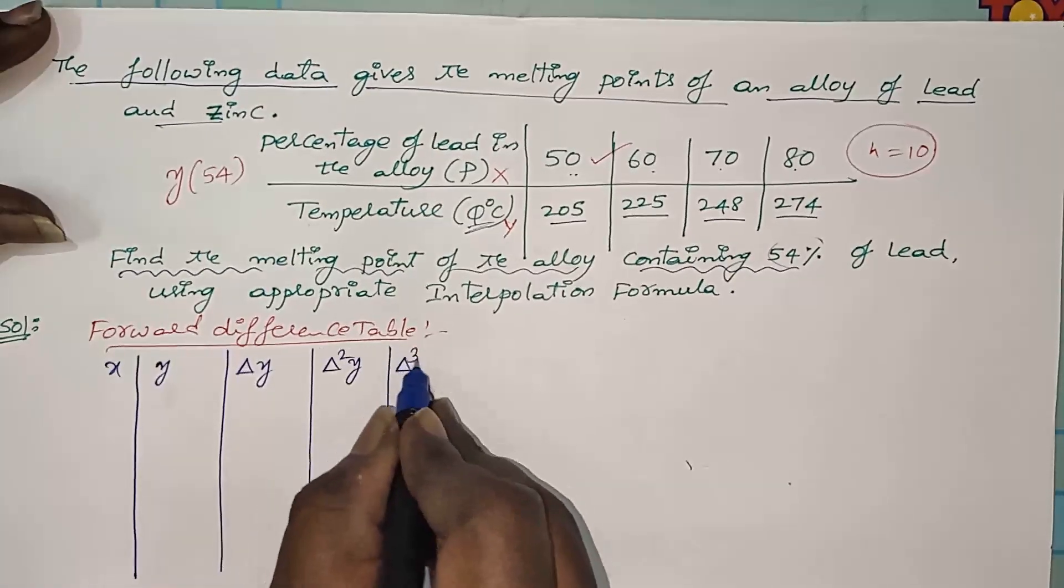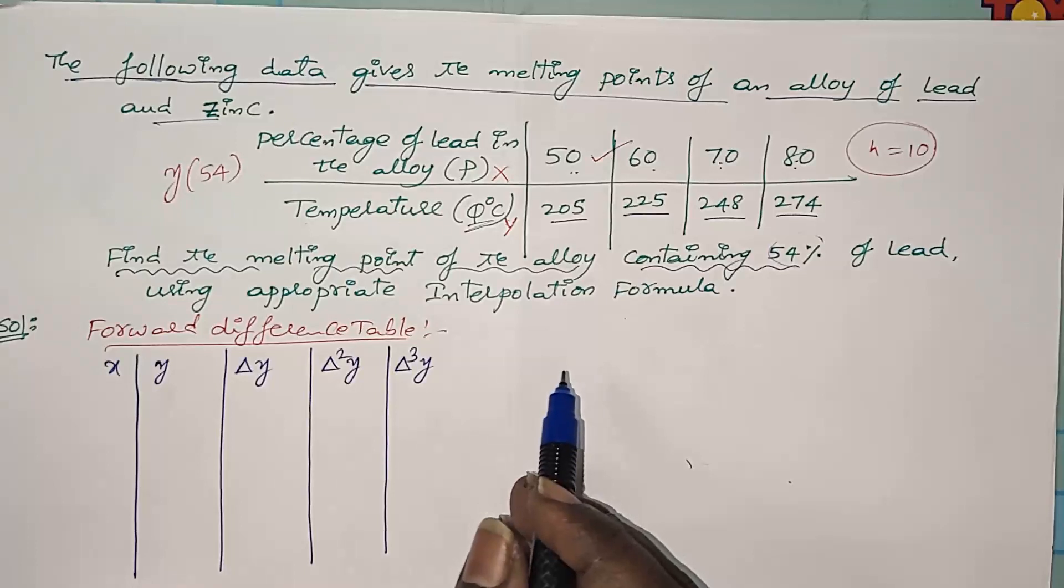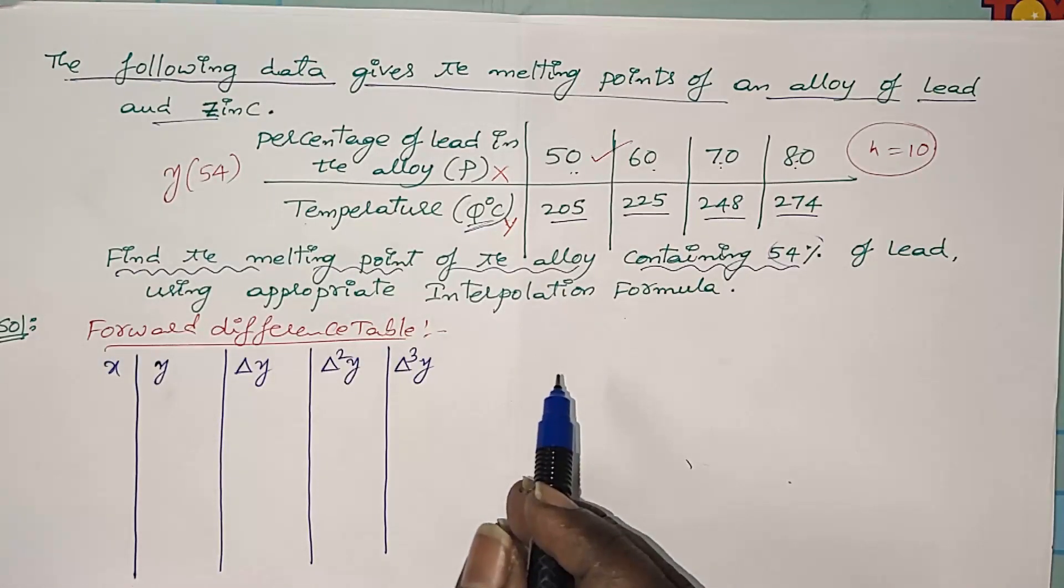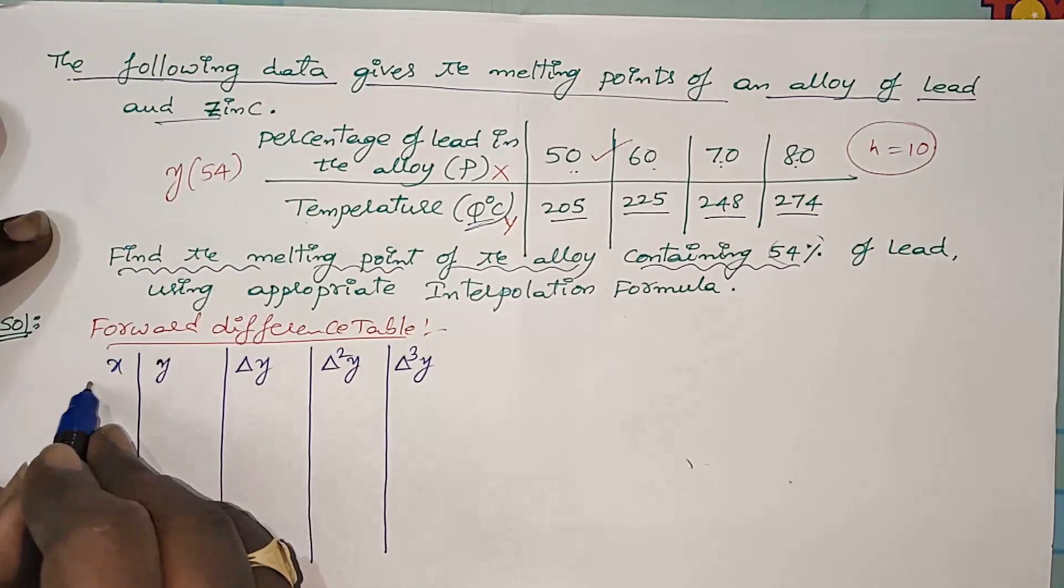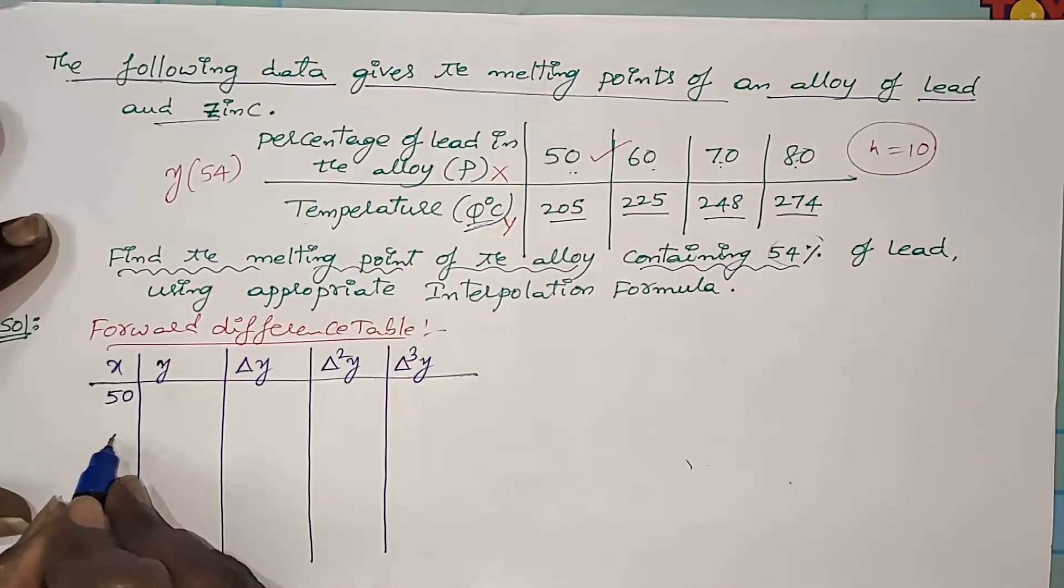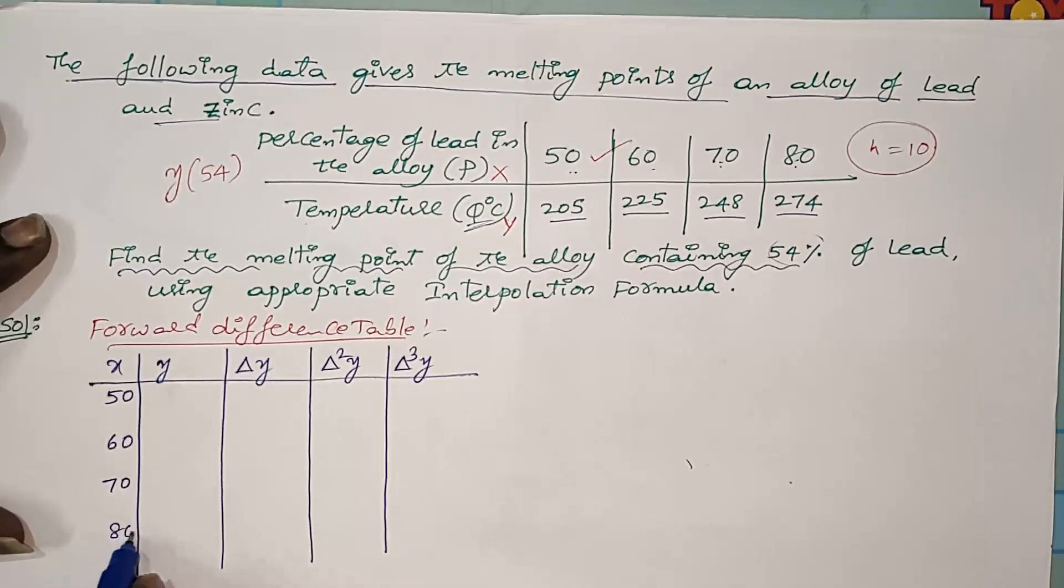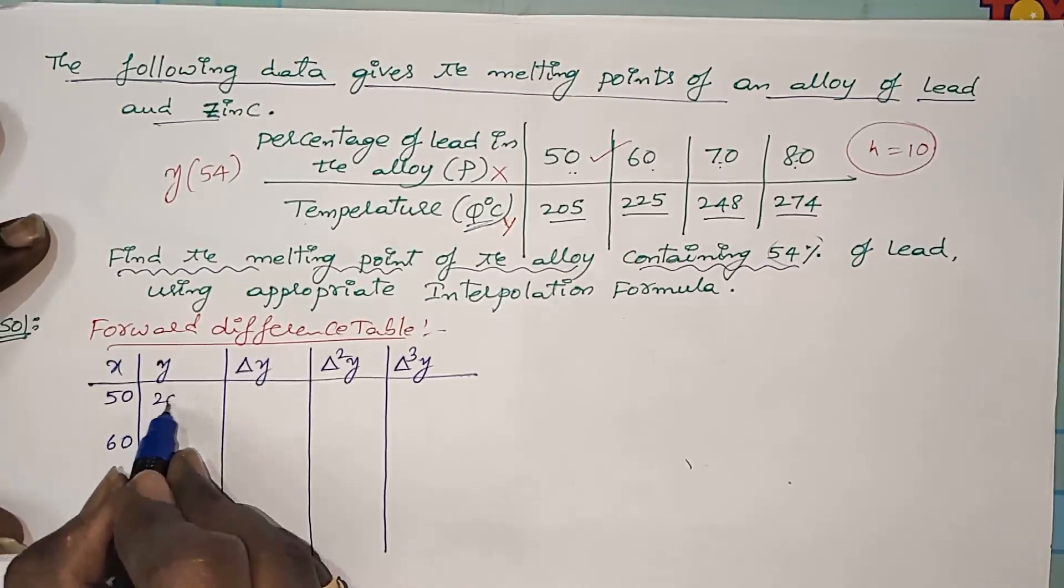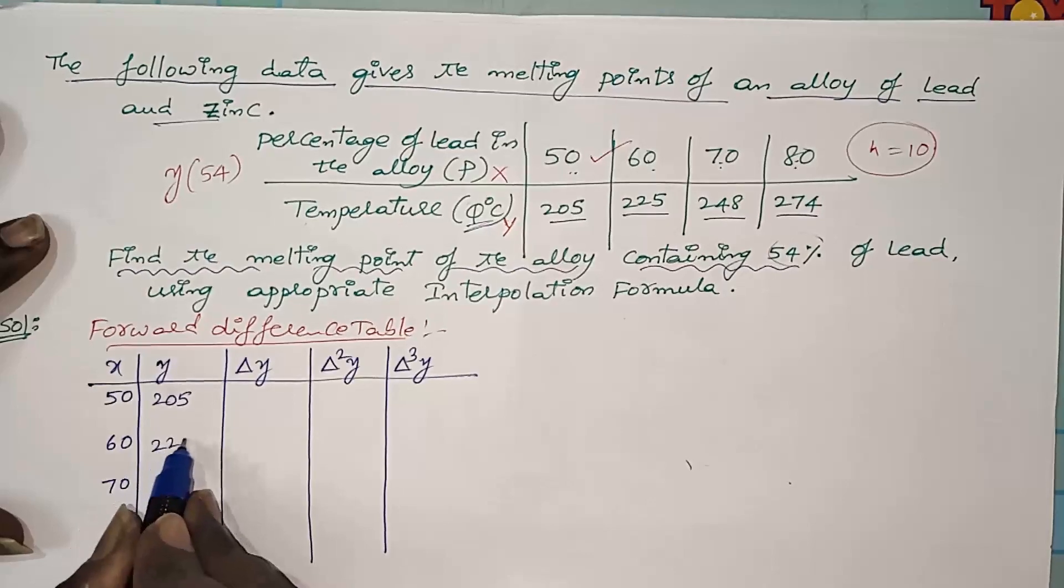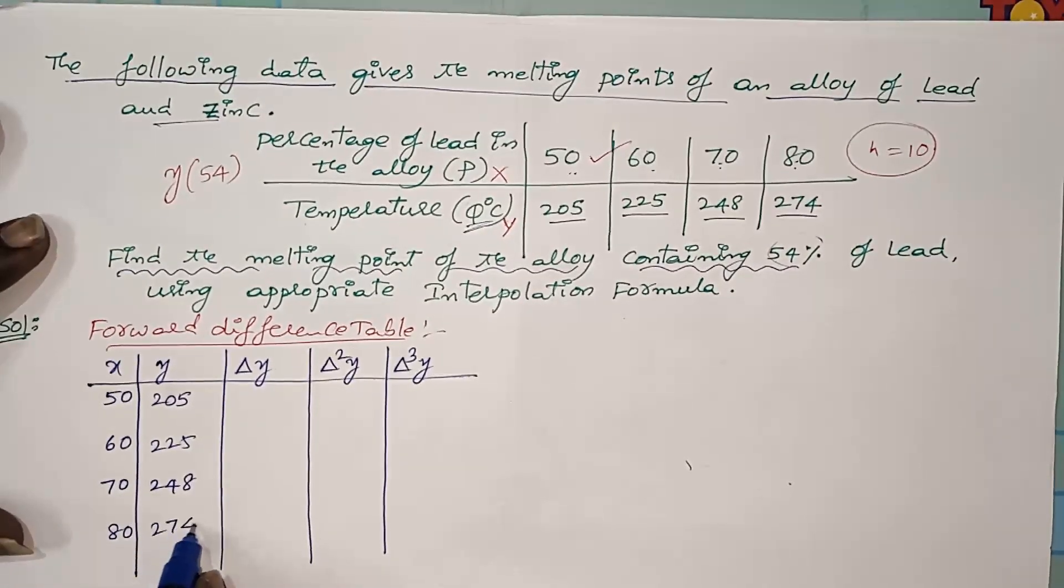Since four values are given to you, you will get only third order forward difference in the difference table. X values are 50, 60, 70, 80. Y values are 205, 225, 248, 274.